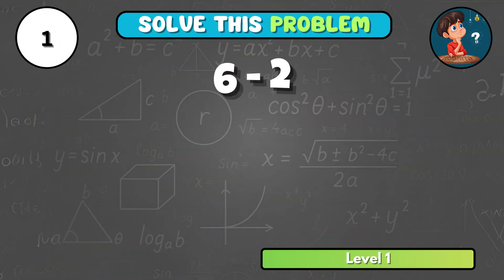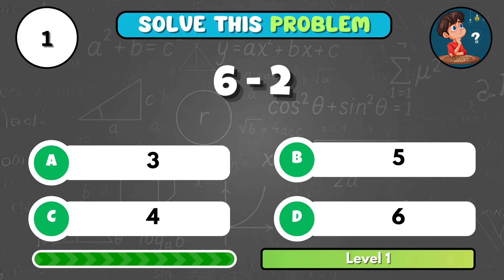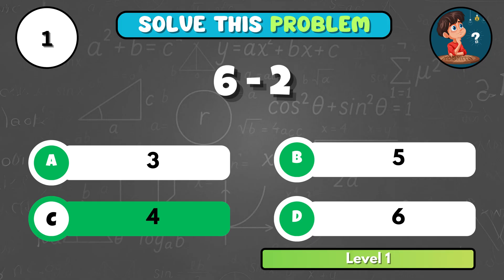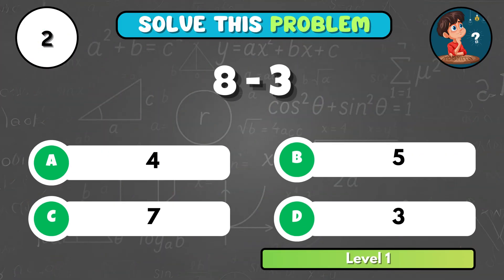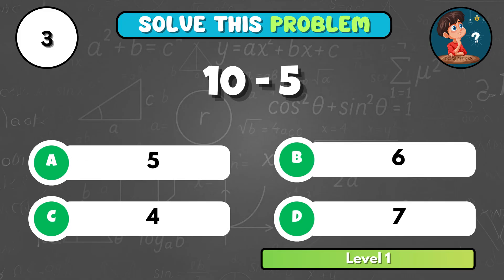What is 6 minus 2? That gives C, 4! Can you solve 8 minus 3? It's B, 5! Tell me, what's 10 minus 5? That's A, 5!